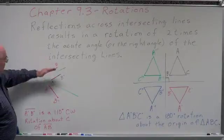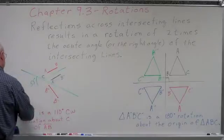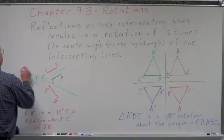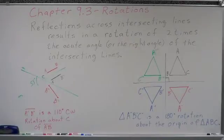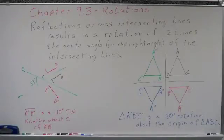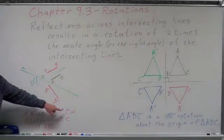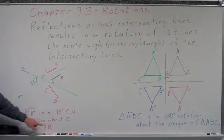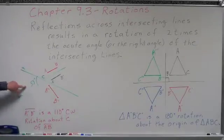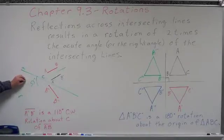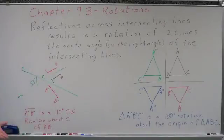If we reflect across two of the intersecting lines — let's label these lines L and N — if we reflect across line L, we get A prime, B prime. Then if we reflect across N, we get A double prime, B double prime. What we've got is segment A double prime B double prime is 110 degrees clockwise, because we're going to the right — a rotation about point C of segment AB. So reflecting across two intersecting lines is the same as a rotation about C of two times the acute angle.